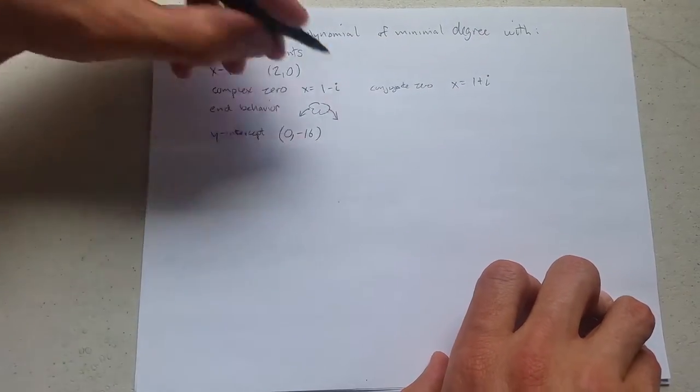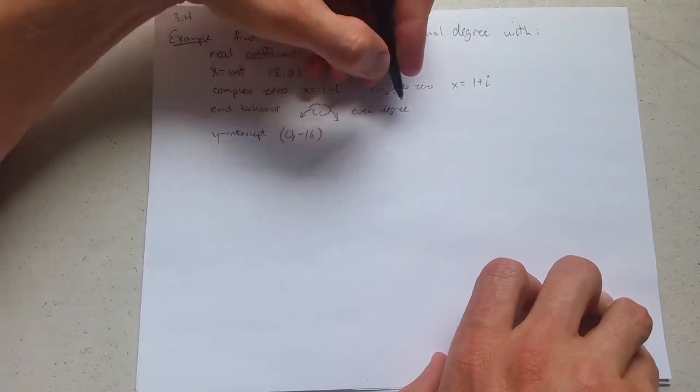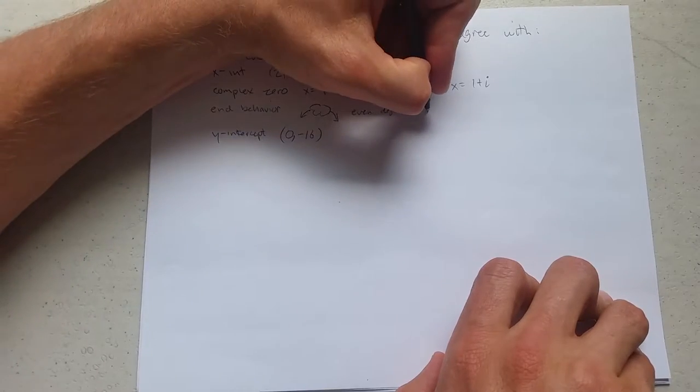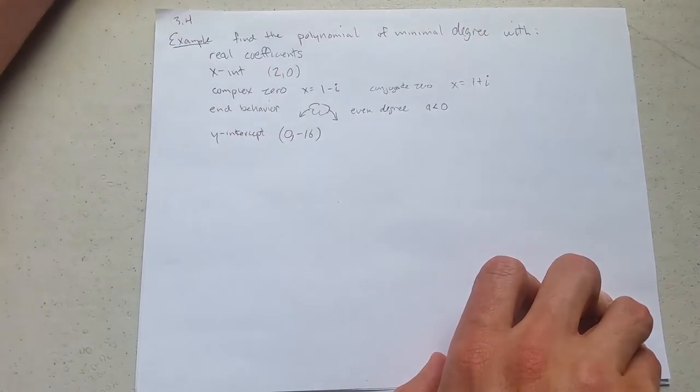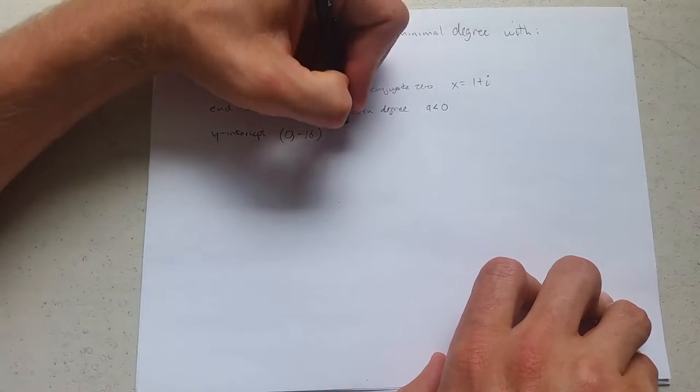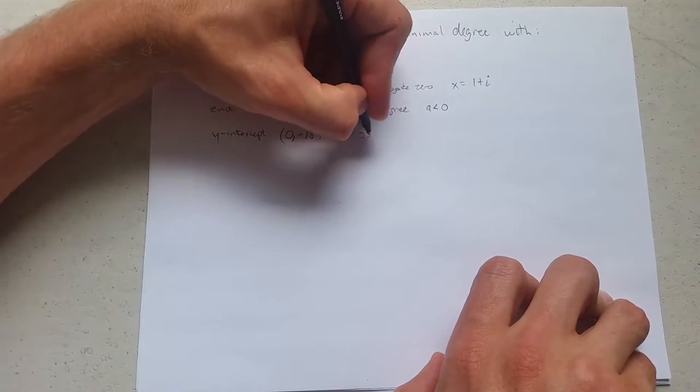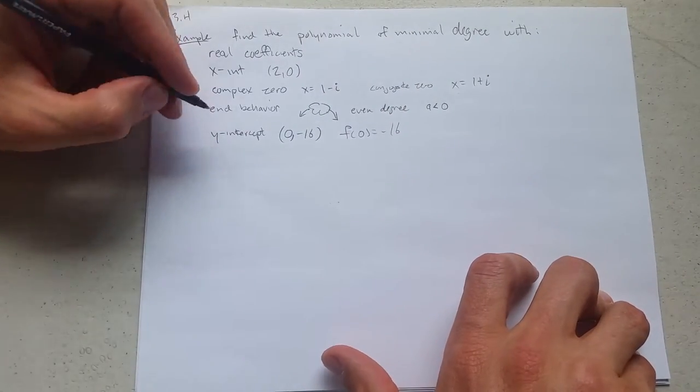End behavior down on both sides, so I know we have an even degree, and our coefficient a needs to be negative. So even degree, a is negative, and our y-intercept is negative 16. If we call our polynomial f, f(0) equals negative 16. That's what a y-intercept means. So let's start lining all these up.